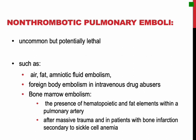Non-thrombotic pulmonary emboli come in several uncommon but potentially lethal forms, including air, fat, and amniotic fluid embolism. Bone marrow embolism happens due to the presence of hematopoietic and fat elements within the pulmonary artery; this can occur after massive trauma and in patients with bone infarction secondary to sickle cell anemia. IV drug abuse is associated with foreign body embolism in the pulmonary microvasculature.